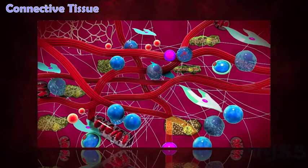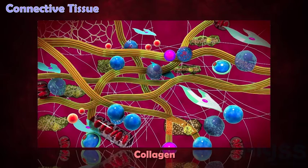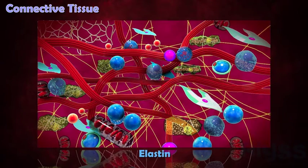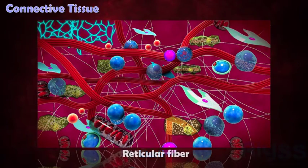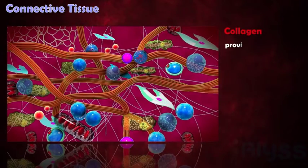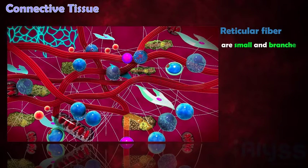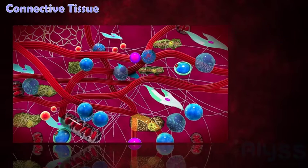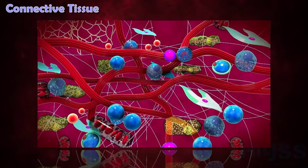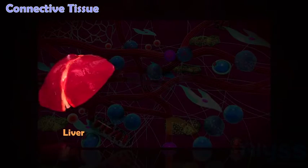Connective tissues contain important protein fibers, which are collagen, elastin, and reticular fiber. While collagen provides strength and flexibility, elastic fibers provide elasticity. Reticular fibers are small and branched; they provide a support framework for organs such as the liver and lymph nodes.